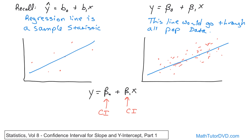This is very analogous to what we just did when we started at y-hat as a point estimate, added and subtracted a margin of error, and said the actual range of y values from the population falls between two values centered about y-hat. So we'll start with b0 and b1 as point estimates, add and subtract some margin of error, and arrive at confidence intervals for beta-naught and beta-1 — using what we have from our existing regression line to formulate that.